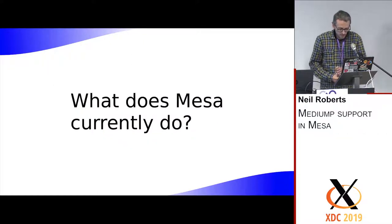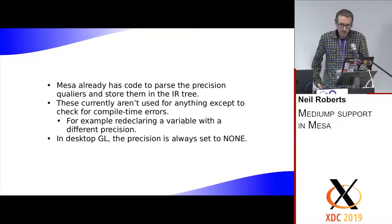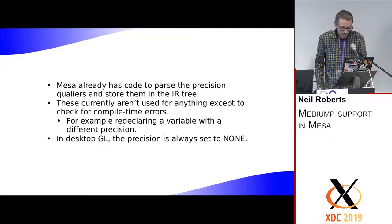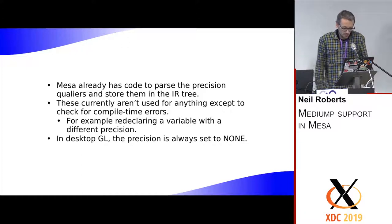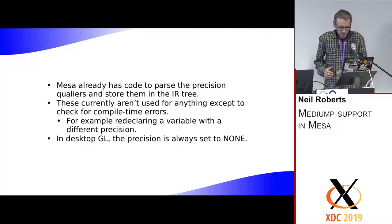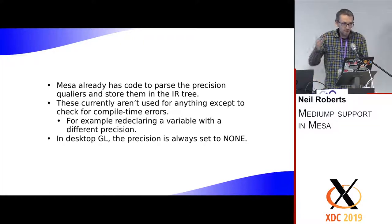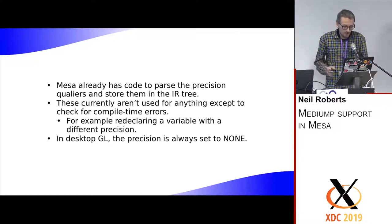What does MESA currently do with these precision qualifiers? It doesn't do much — it just parses them and stores them in the IR tree. As far as I'm aware, they're not really used for anything except to check for compile-time errors. For example, if you declare a variable with one precision and later declare it with another, MESA has enough information to report a compile error. In desktop GL, in later versions of GLSL, precision qualifiers are allowed but supposed to be ignored. So MESA just immediately sets all the precision on all variables to none.